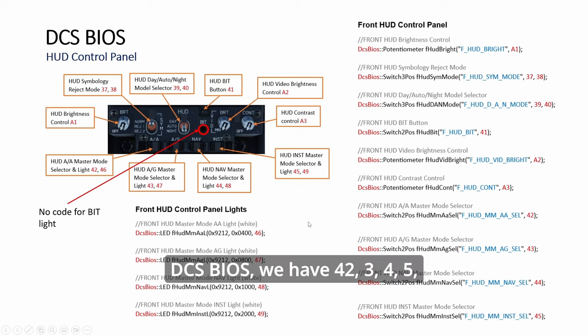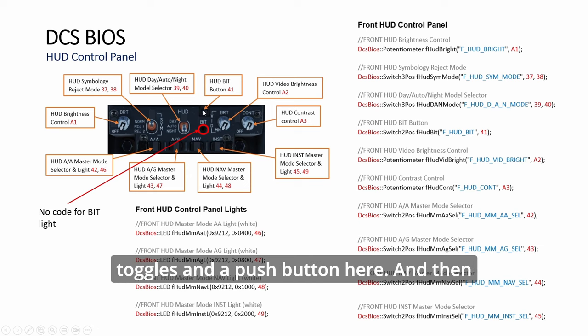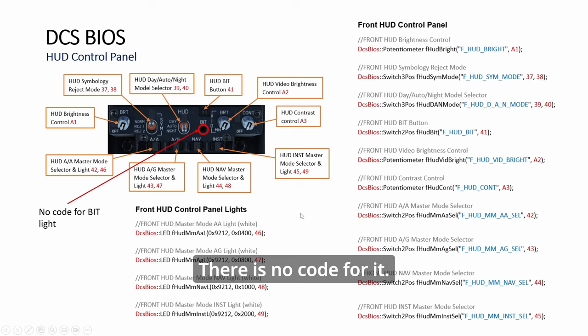Then DCS BIOS. We have 42, 3, 4, 5 as the mode. Right? And then 46, 7, 8, 9 for the lights. So see here the lights, 46 to 49. 42 to 45 as the master mode. Then the rest are standard. Right? Parts here, toggles, and a push button here. And then this is just a hole. There is no code for it. There are, I think, two other places where we see beat buttons. And so far there's no code for the beat. So it's just for show.